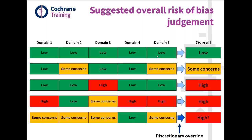If there is a mixture of low risk of bias and some concerns across the domains, the result is 'some concerns' overall. If at least one domain has a high risk of bias judgment, the overall risk of bias for that result is high. With a mixture of everything, we still go with the highest risk of bias — there's nothing higher than high, so it's high.